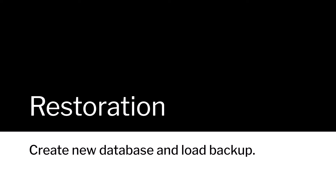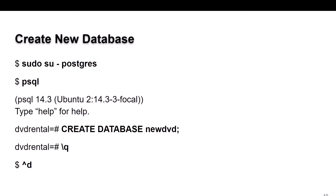The restoration is also fairly easy. We have to first create a place to put the data. From the Linux command prompt, we're going to use sudo to become the user postgres. Once we're the user postgres, we run the command psql, the command line interface. And in there, we type in create database new_dvd. To get out of psql, type in backslash Q, and then Control-D to get out of being the user postgres.